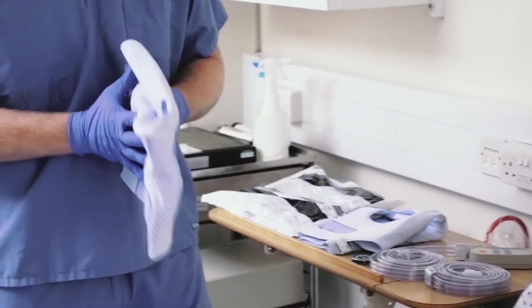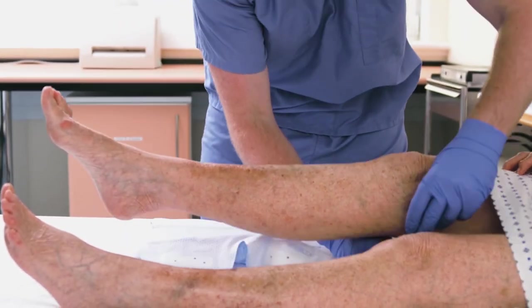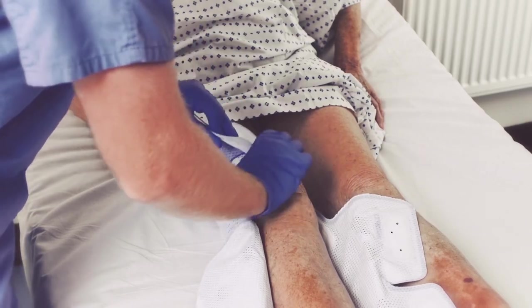To place the thigh length sleeve, first orientate it with the back of the patient's leg, then wrap the sleeve around the leg, fastening the Velcro closure tabs.